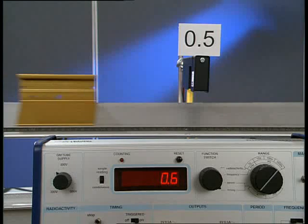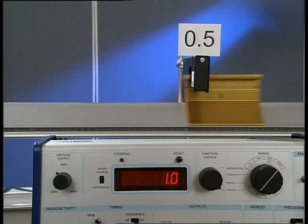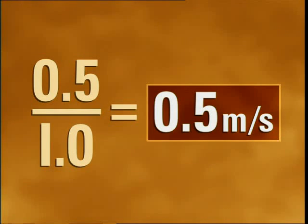To travel the first half a meter, it took one second. Distance traveled, which is 0.5 meters, divided by time taken, which is 1 second, gives an average speed of 0.5 meters per second.